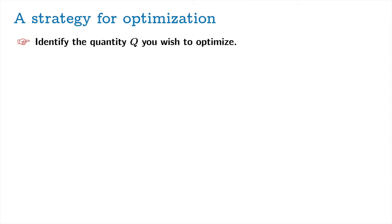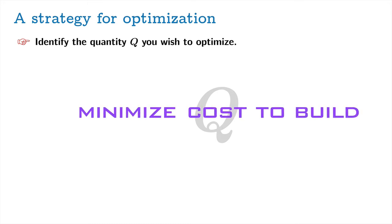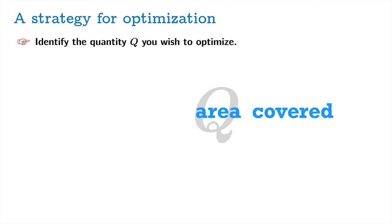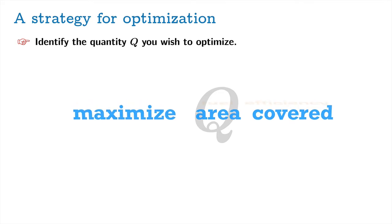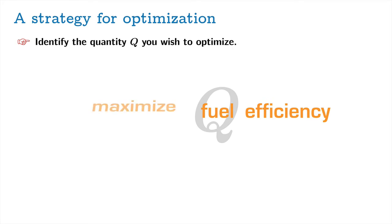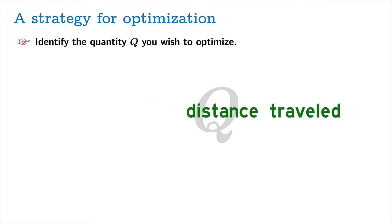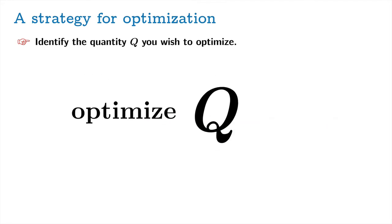Here's a strategy for optimization. It is necessarily general because each optimization problem can look quite different from others. First, identify the quantity Q you wish to optimize. This is usually not challenging — it's usually built right into the problem. Maybe there's a cost to build something and you'd like to minimize that cost, or an area you're trying to cover and you need to maximize it, or fuel efficiency you want to maximize, or a journey where you want to minimize the distance traveled.